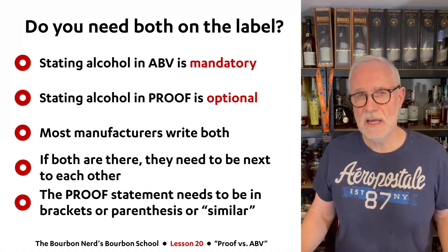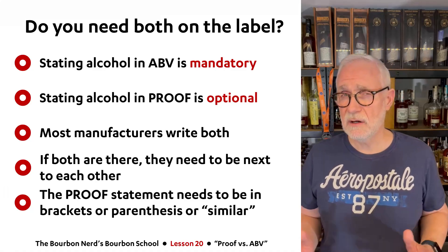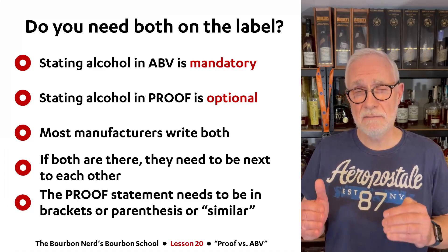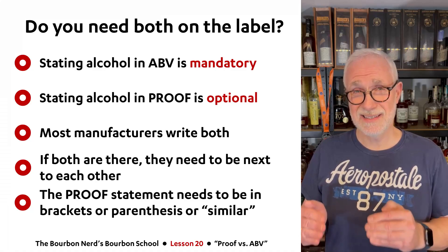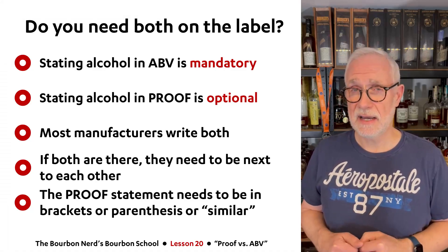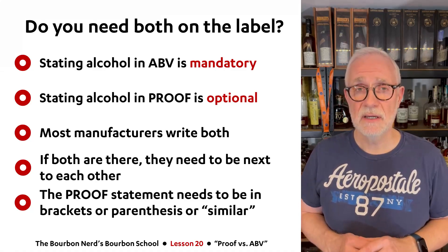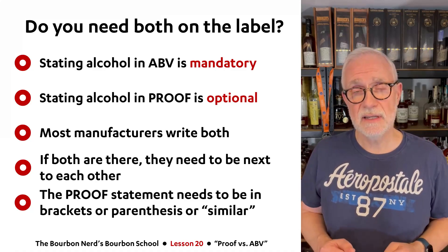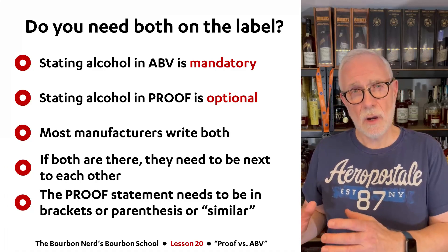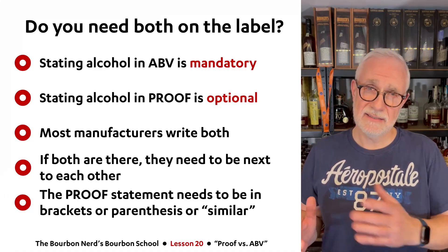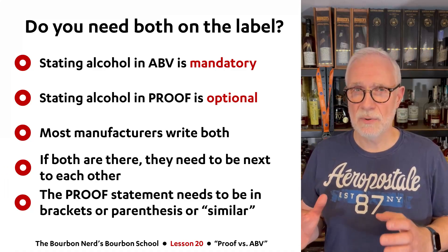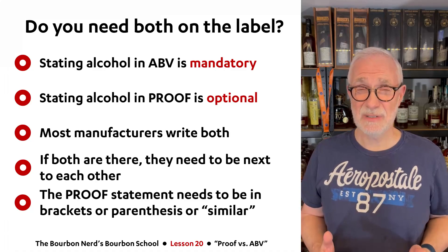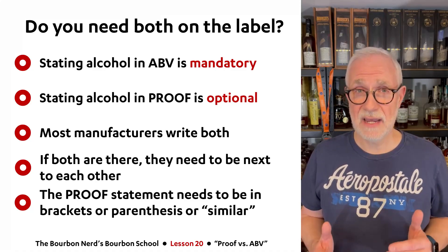And then there are a couple of rules you might not know. If you put both on the label, they need to be very close to each other — the law actually says next to each other, and I can give you many examples where that is not happening. Also, the optional indication, which is the proof indication, needs to stand out as optional — shown in brackets, parentheses, or with a slash or something like this. I would say 90% of manufacturers do not adhere to this rule.